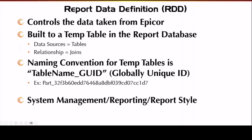The Report Data Definition controls what data is taken from Epicor. The way Epicor Reports work is they build to a temporary table in the report database. In your Report Data Definition you're going to see two things: data sources, which is what tables you're bringing in, and then your relationships, which is what joins you're doing between your tables. The naming convention for these temp tables is going to be your table name, underscore, a GUID — a global unique ID number. An example is 'part underscore' and then a bunch of gibberish.